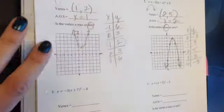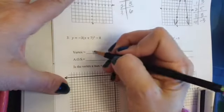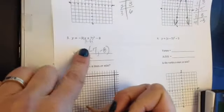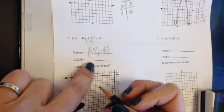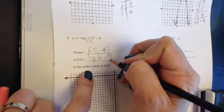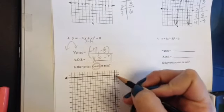Moving on to number 3. In problem number 3, the vertex is going to sit at negative 7, negative 8. Remember, it's x minus h inside of here, so it must have been a negative 7 that had gone in. The axis of symmetry sits at x equals negative 7.